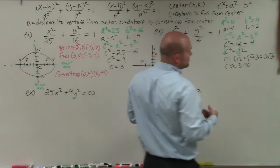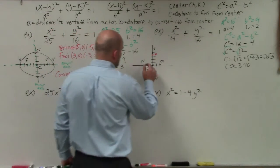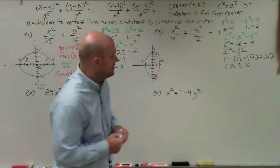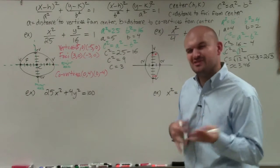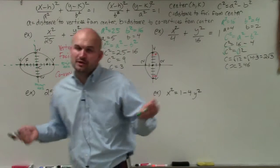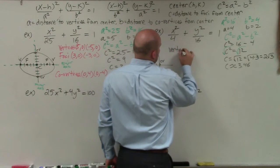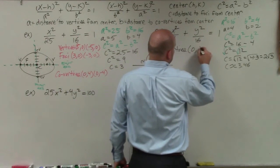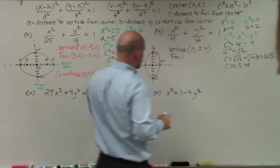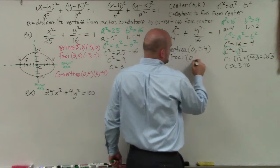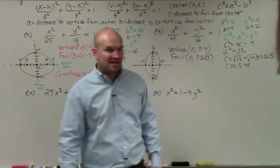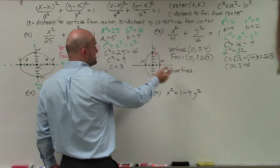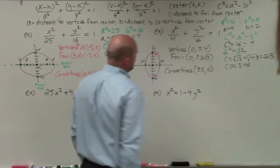Now let's write the coordinates. The vertices are at (0, ±4). The foci are at (0, ±2√3) — I won't use the approximation here. The co-vertices go left and right by B = 2, so they're at (±2, 0). And there you go for the second example.